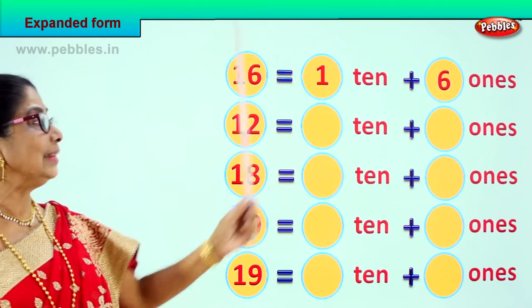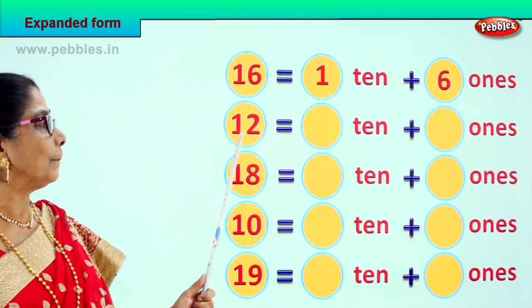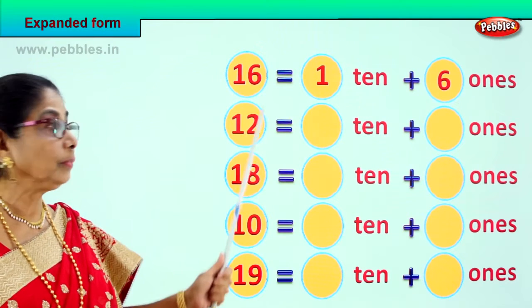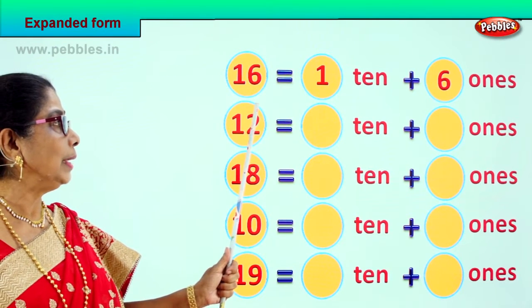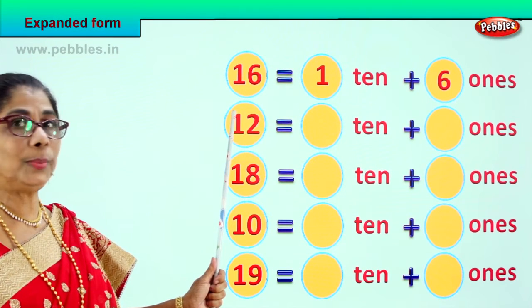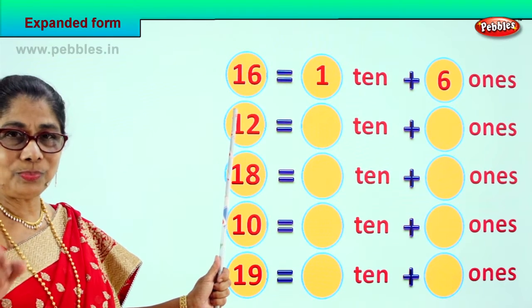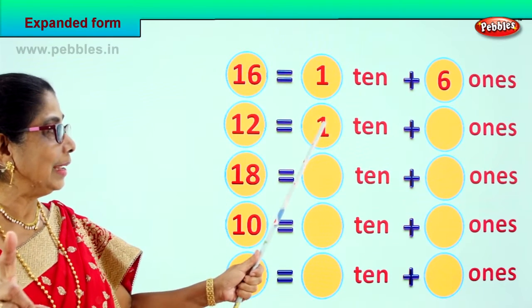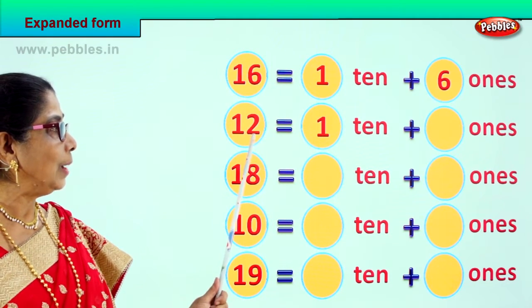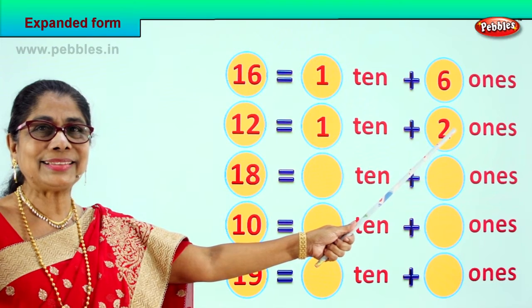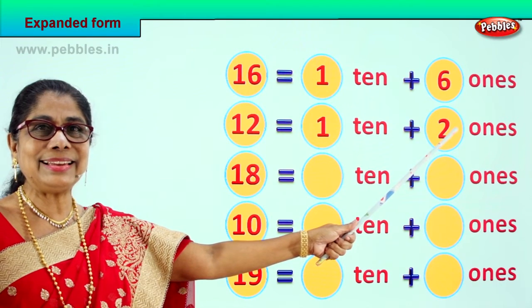Now let's take the next one. You have 12 here. Ones place, tens place. How many tens? 1 ten. How many ones? 2 ones. Excellent!